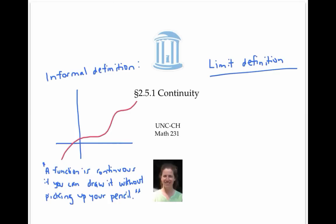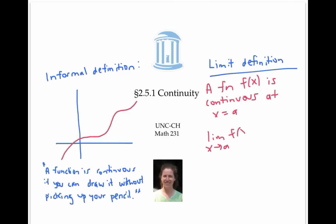This video gave a precise definition of continuity at a point in terms of limits. Namely, a function is continuous at the point x equals a if the limit as x goes to a of the function is equal to the function's value at a.